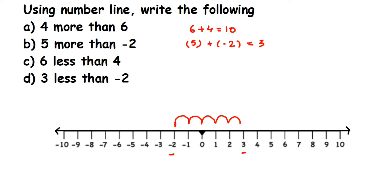You can also solve this using the rule: whenever you are adding two integers with different signs, you subtract them. So 5 minus 2 equals 3 — you can do it that way. But since the question asks us to use the number line, we are solving using the number line.